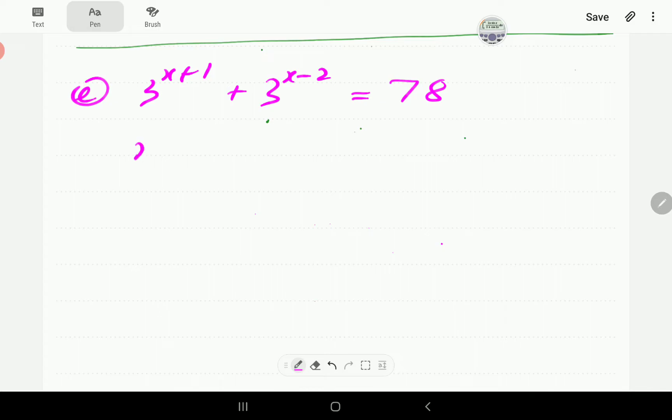Now, 3^(x+1) we can write as 3^x times 3^1. And then 3^(x-2). Then now you can see that 3^x is a common factor here. So if we take that out, then inside the brackets, we're going to have 3 plus 3^(-2), which is the same as 1 over 3 squared.